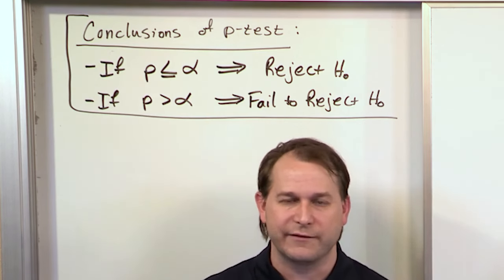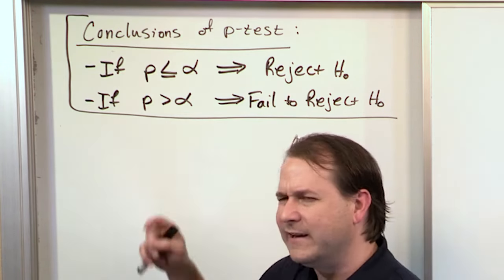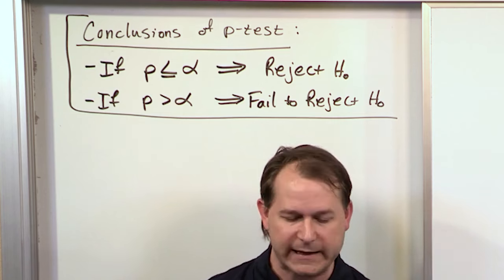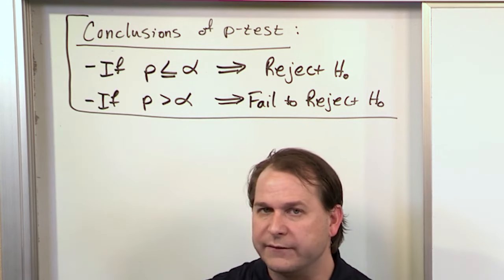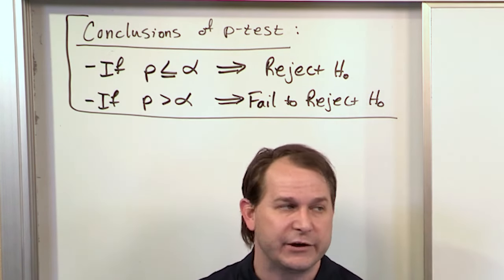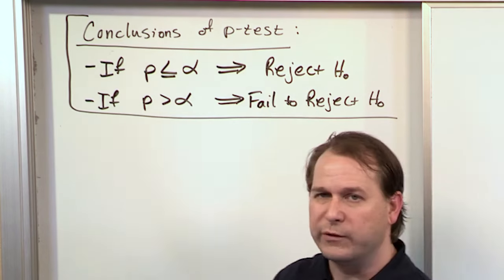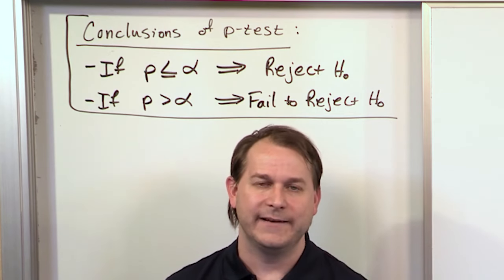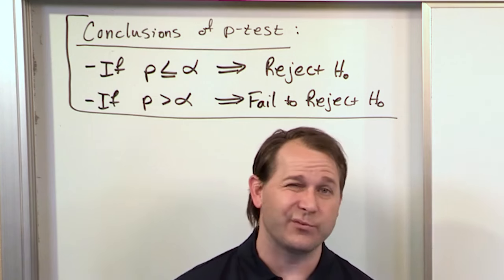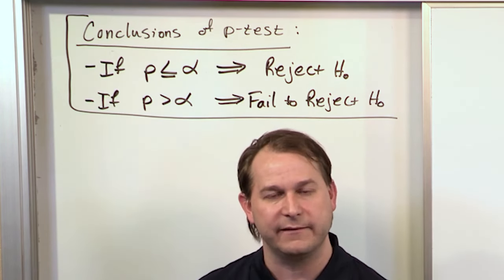In most textbooks, they're just going to say: this is what a p-value is — the probability of getting something more extreme than your sample data — and if it's less than alpha, reject; if greater, fail to reject. You could just blindly follow that. I could give you a problem right now with a null hypothesis, alternate hypothesis, level of significance alpha, and your data. You calculate a p-value, compare it to alpha, and that gives you the two cases.